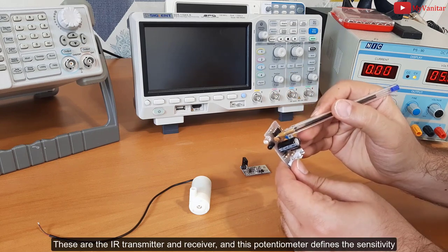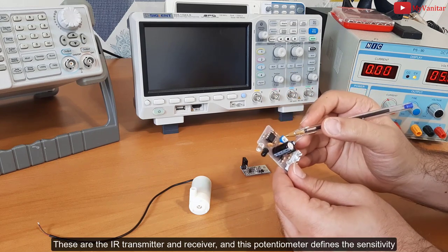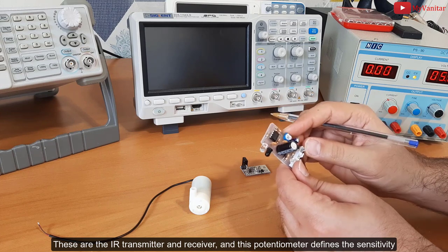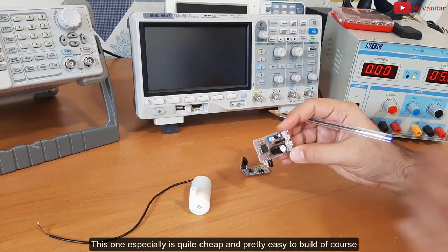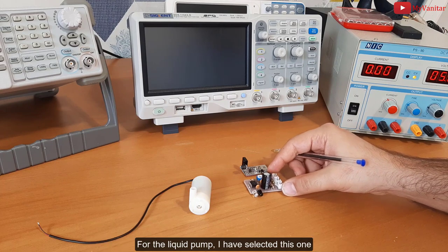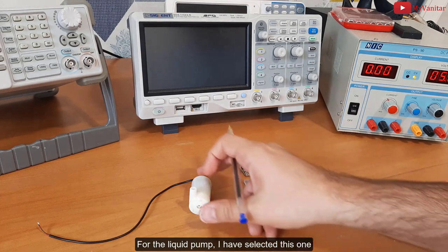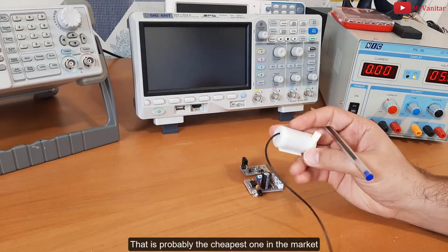And this one uses DIP components, single layer PCB board. These are the IR transmitter and receivers, and this potentiometer defines the sensitivity. This one is quite cheap and pretty easy to build. For the liquid pump, I have selected this one that is probably the cheapest one in the market.